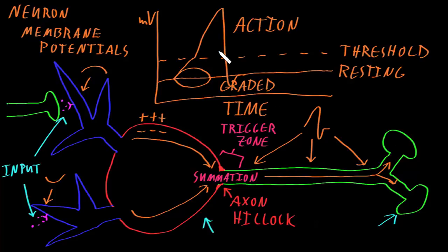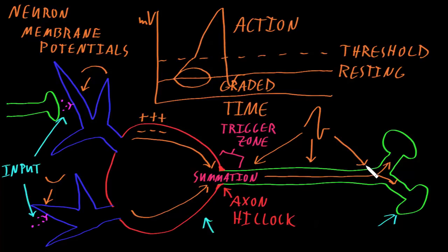Action potentials are usually large in size, brief in duration, and they can travel very long distances down very long axons — including axons that start at the top of your brain and go all the way down to the bottom of your spinal cord in your low back. Action potentials are usually the same size and duration for any given neuron. Axons that are larger in diameter usually conduct action potentials faster, and axons that have a myelin sheath wrapped around them also tend to conduct action potentials faster.